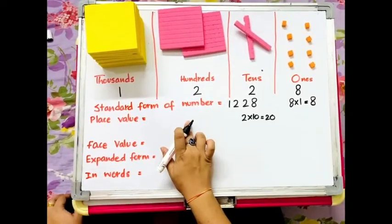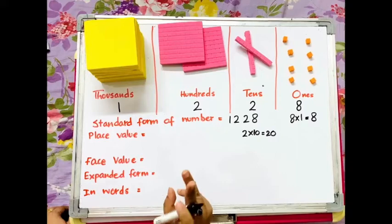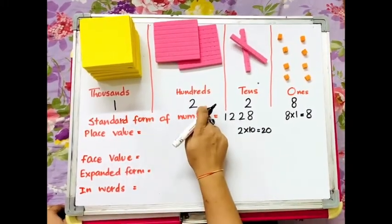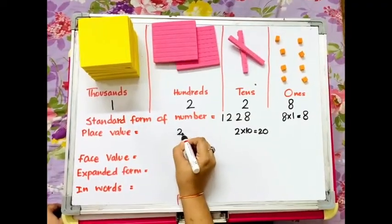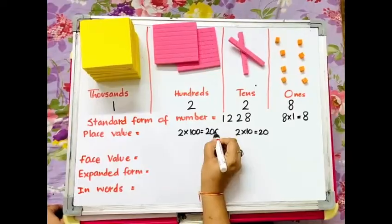Again, 2 is at hundreds place. So, it means that there are 2 hundreds. Therefore, the place value of this 2 in the number is 2 into 100, which is equal to 200.